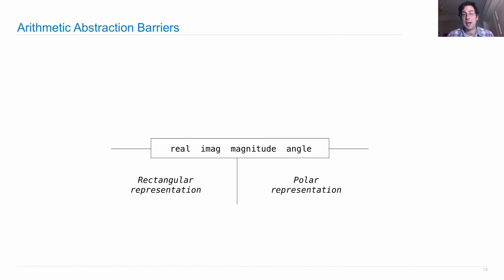Those together describe where it is in rectangular space, and a magnitude and an angle. Now an actual complex number might only be represented by two out of these four things, but we can always compute the other two using functions.